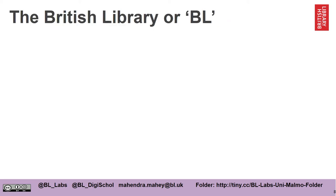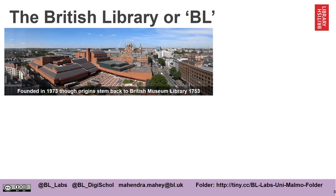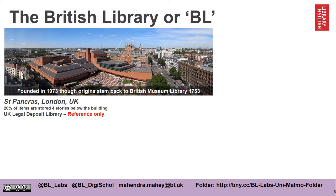The British Library was founded in 1973, though its origins stem back to the British Museum Library in 1753. Here you can see the building in London, St Pancras. Part of the building actually resembles a ship. At St Pancras, 20% of our items are stored and some of the storage areas are actually beneath the building, about four storeys.